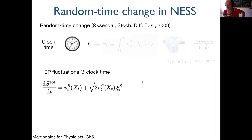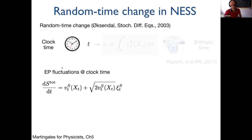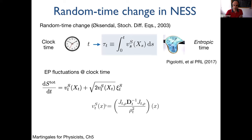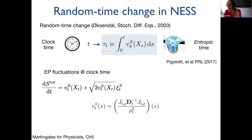There is an interesting technique from martingale theory and finance called the random time change. Up to now I showed how entropy production changes in normal (deterministic) time. Now I will do the following trick: I measure time differently — weighted by the entropic drift. When the system dissipates a lot or produces a lot of entropy, my clock runs faster. I call this 'entropic time'.